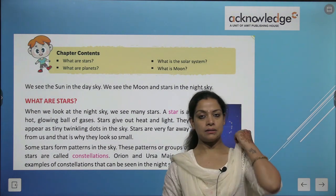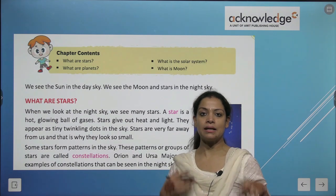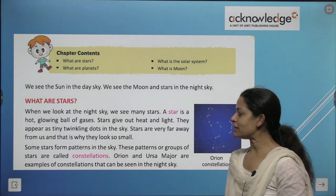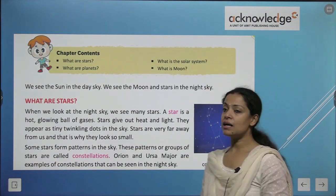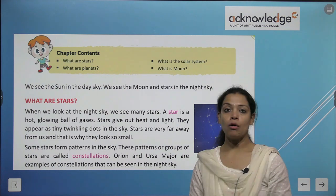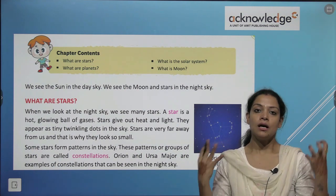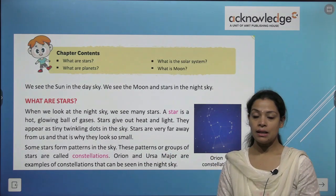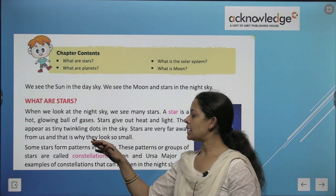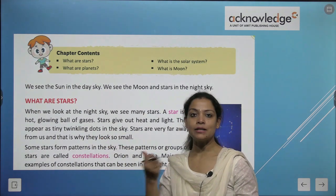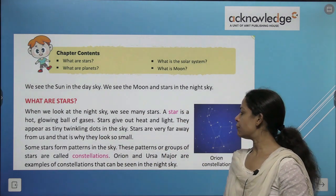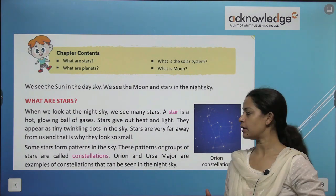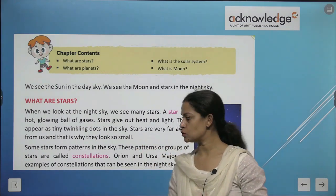So what are stars? They look so beautiful and twinkling. When we look at the sky we see many stars. A star is a hot, glowing ball of gases. Stars give out heat and light. They appear as tiny twinkling dots in the sky because they are very far from us, and that is why they look so tiny and small.